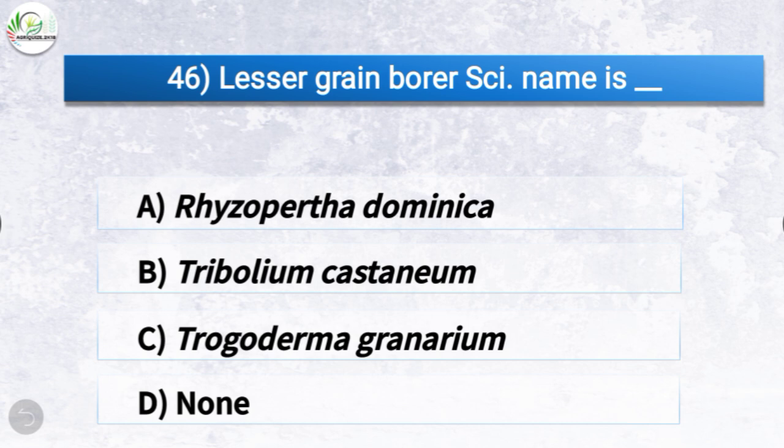Question number forty-six: the scientific name of lesser grain borer is what? The options are Rhizopertha dominica, Tribolium castaneum, Trogoderma granarium, or none of these. The correct answer is option A, Rhizopertha dominica. So the scientific name of lesser grain borer is Rhizopertha dominica.